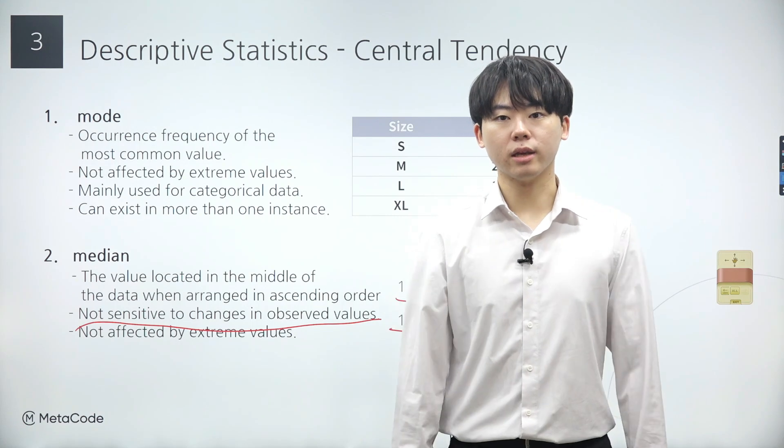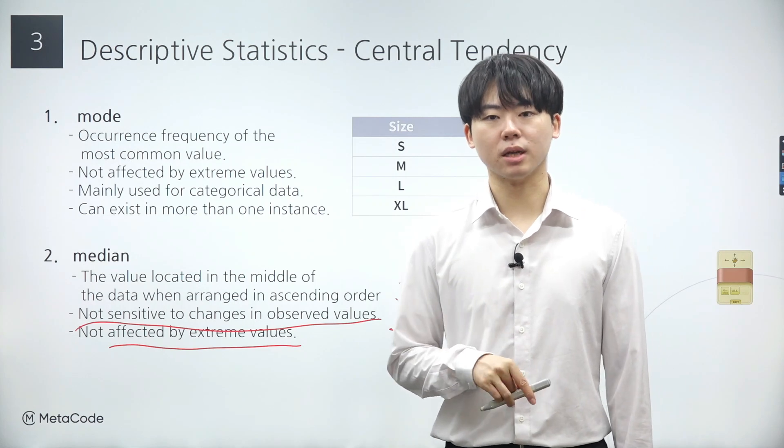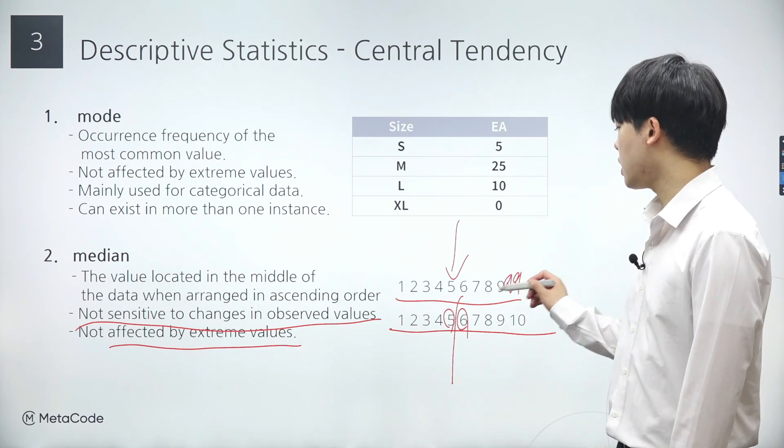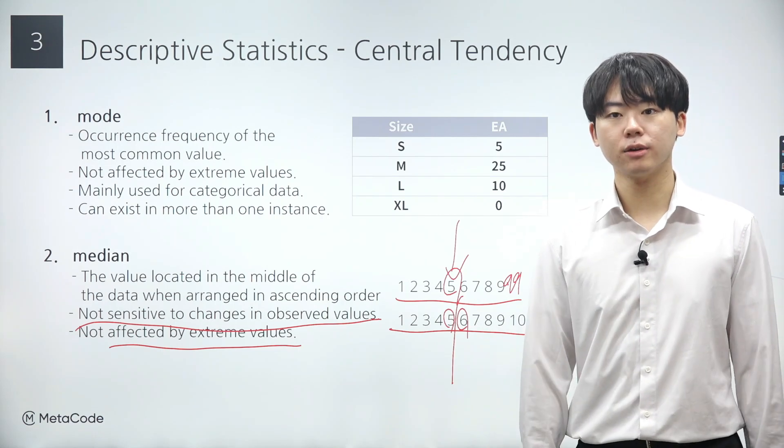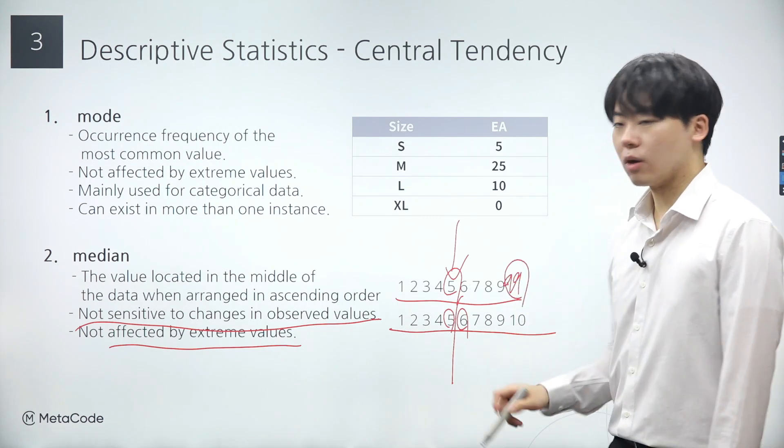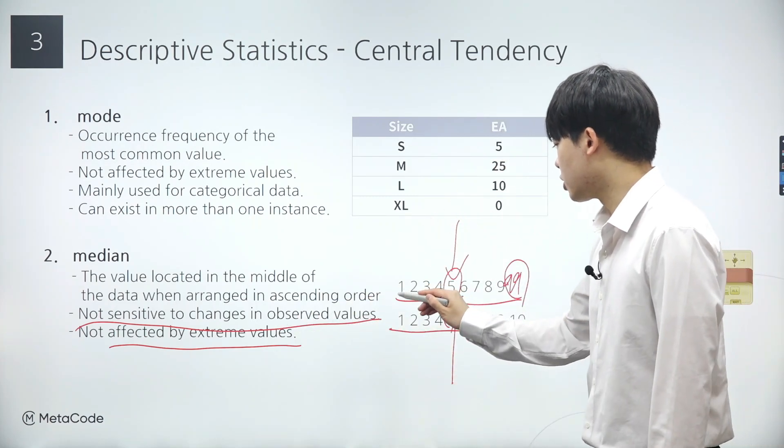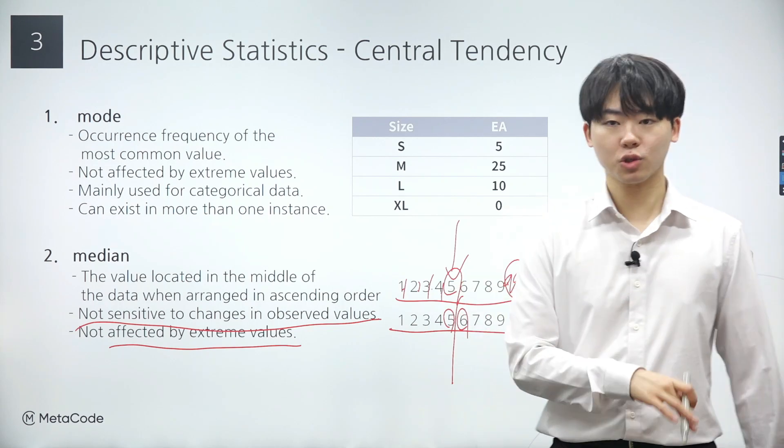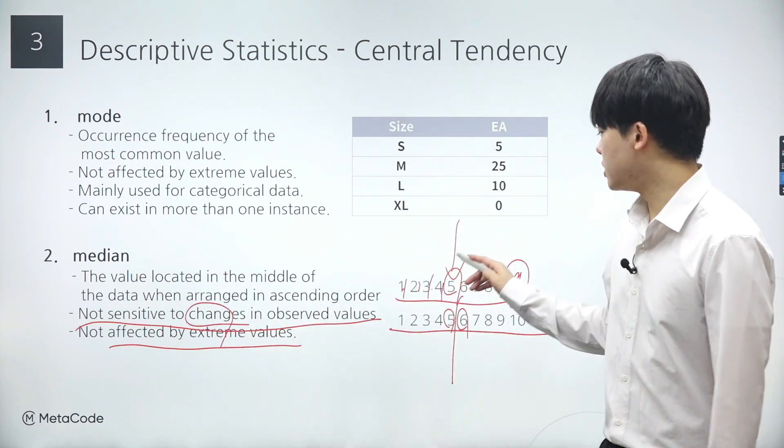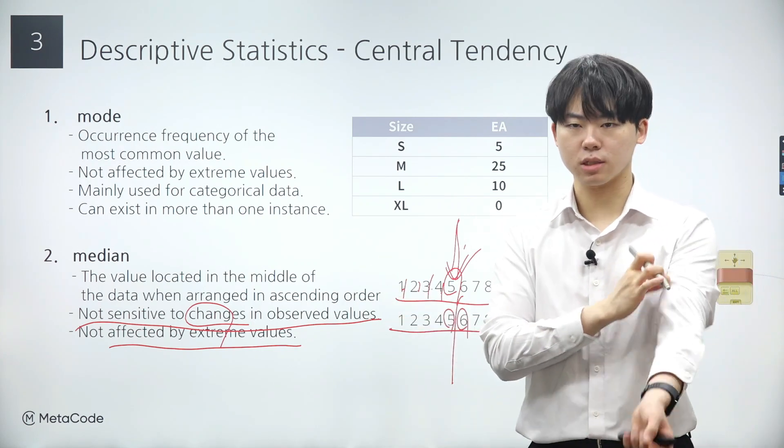Similar to the mode, the median is less sensitive to changes in observed values or the presence of extreme values. Consider new data point 99 next to 9. Obviously, it's an extreme value. However, despite this extreme value, the median of our updated data set remains at 5.5, still in close proximity to the original median of 5. Calculating the median involves identifying the relative position of the central value within a sorted data set. Moreover, even when values change from 1 to 1.1, 2 to 2.1, 3 to 3.1, etc., the median is less sensitive unless its relative position changes and it remains close to its original value, 5. It's one of the key characteristics of the median.